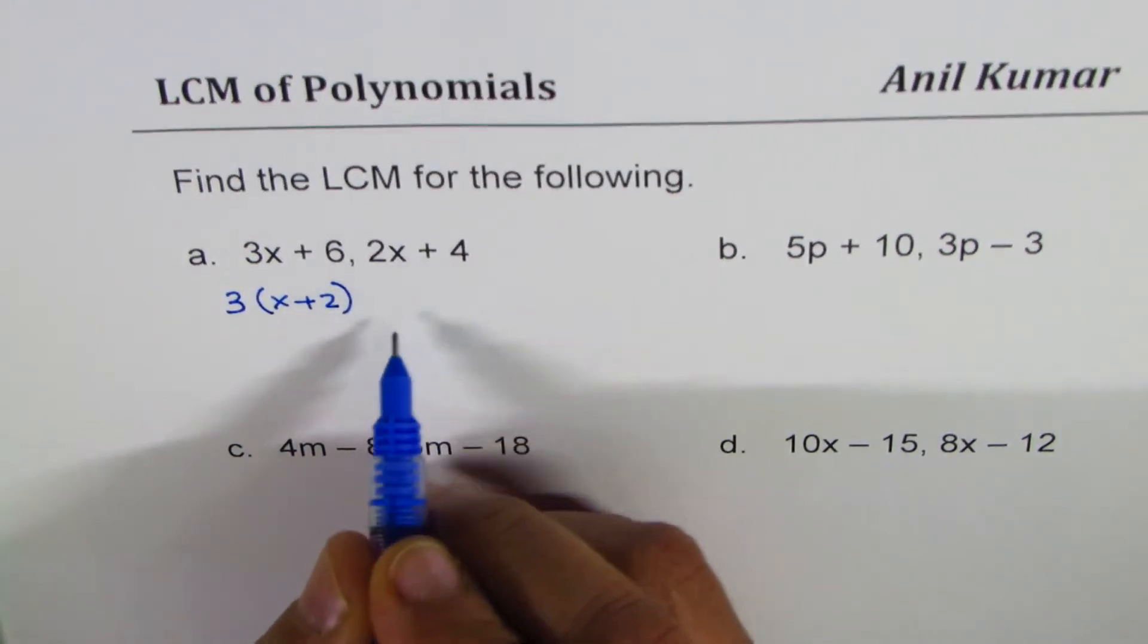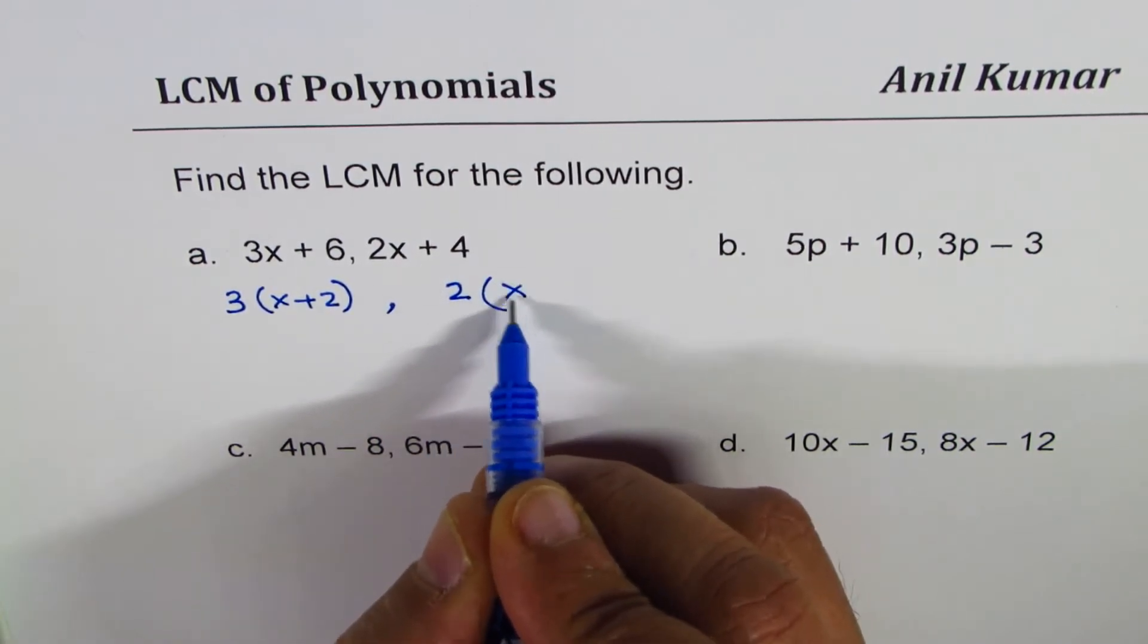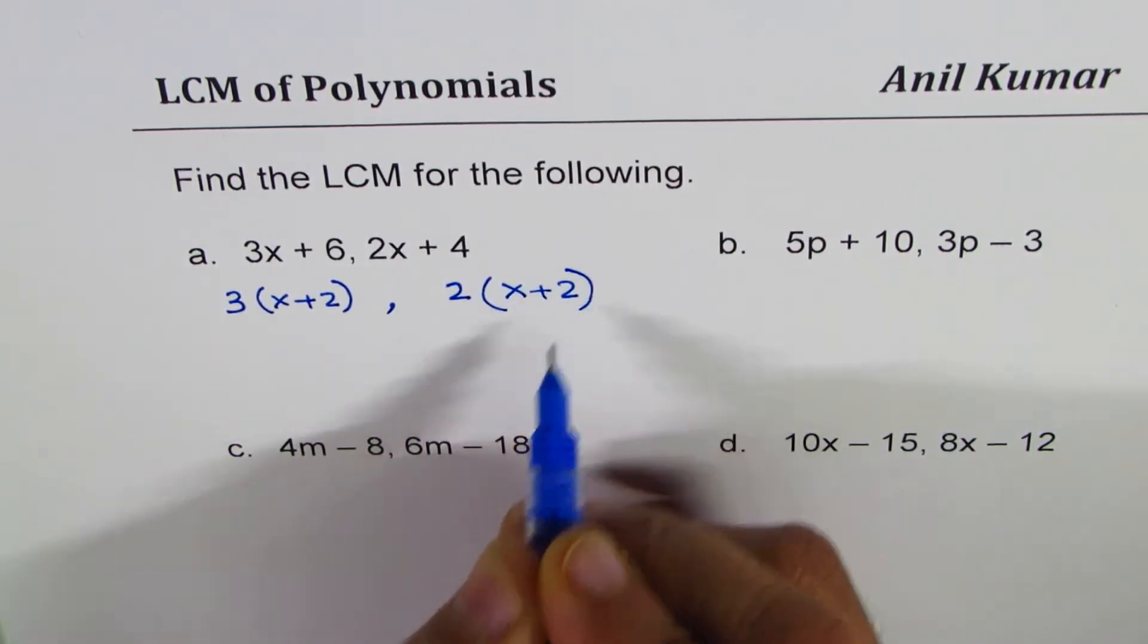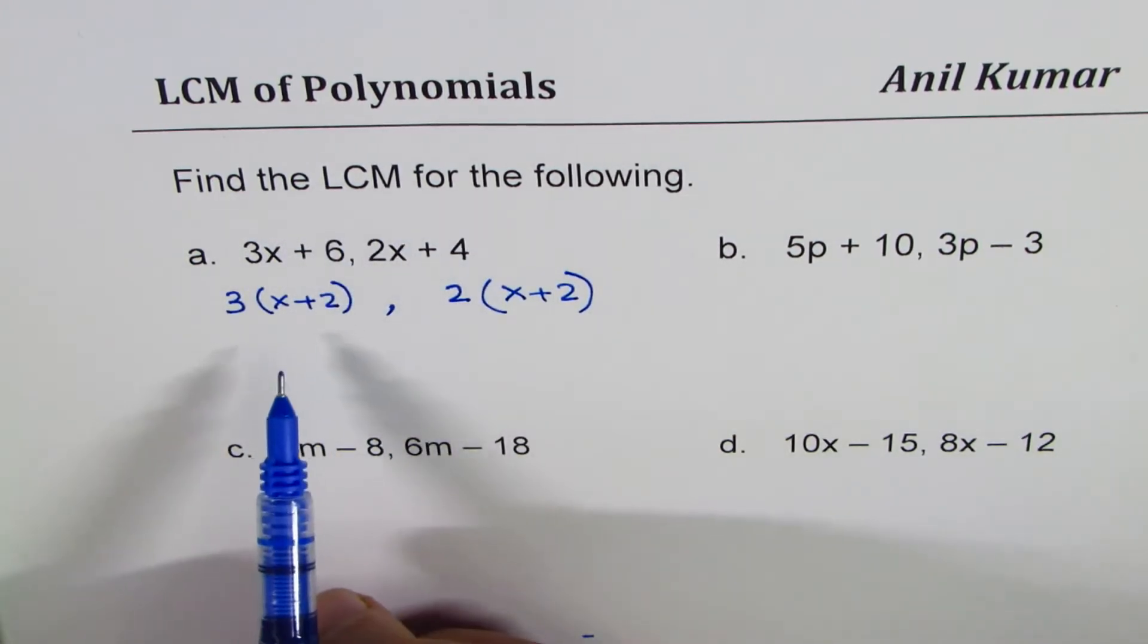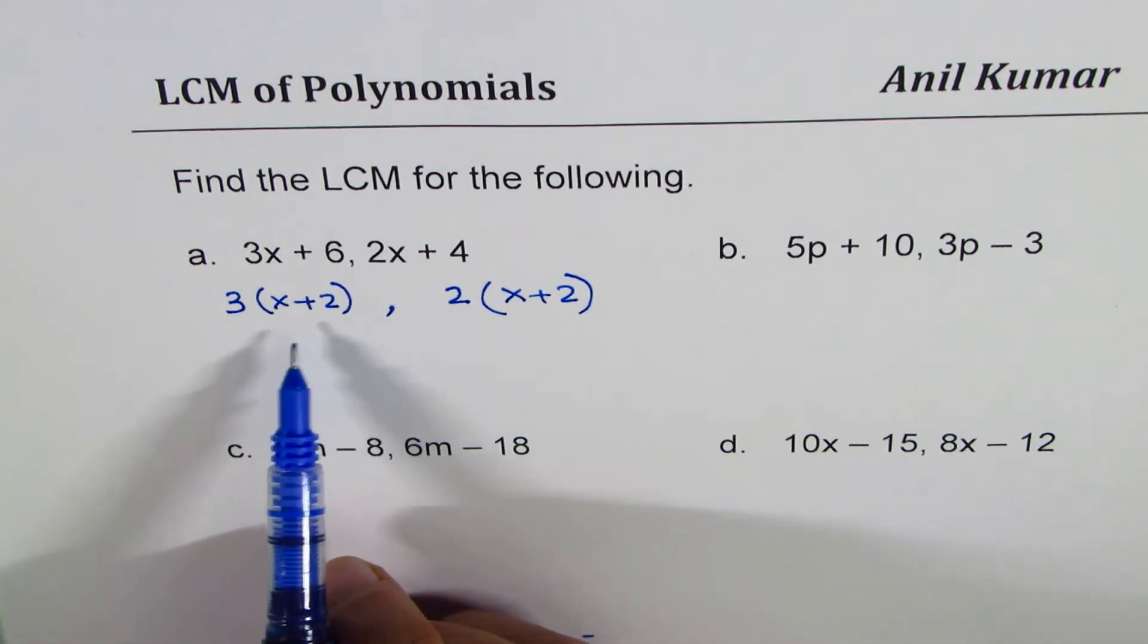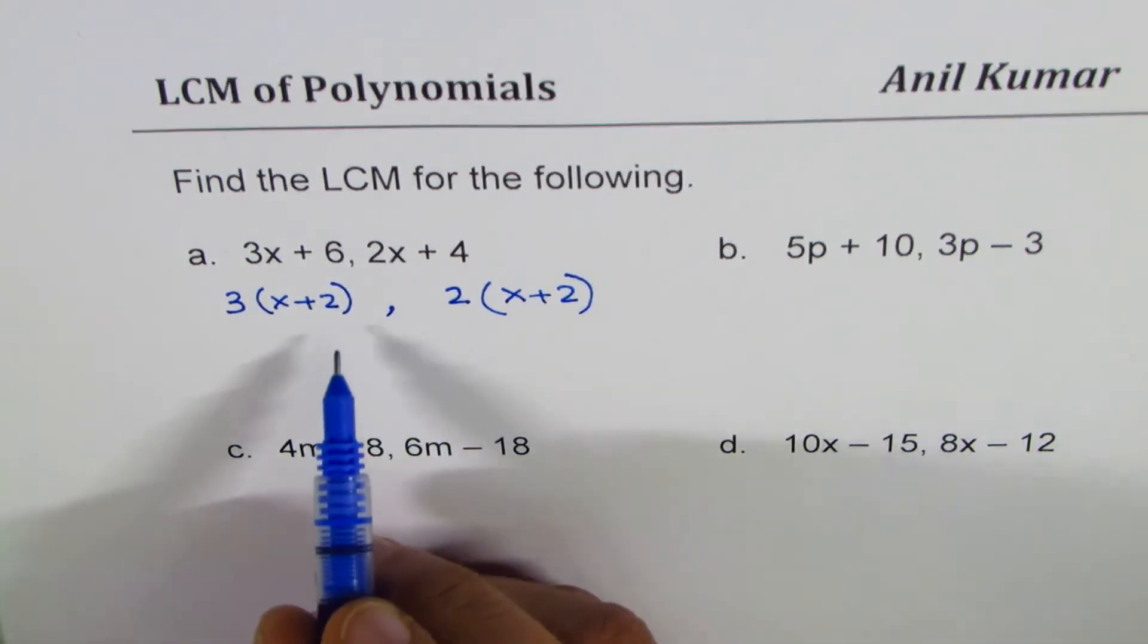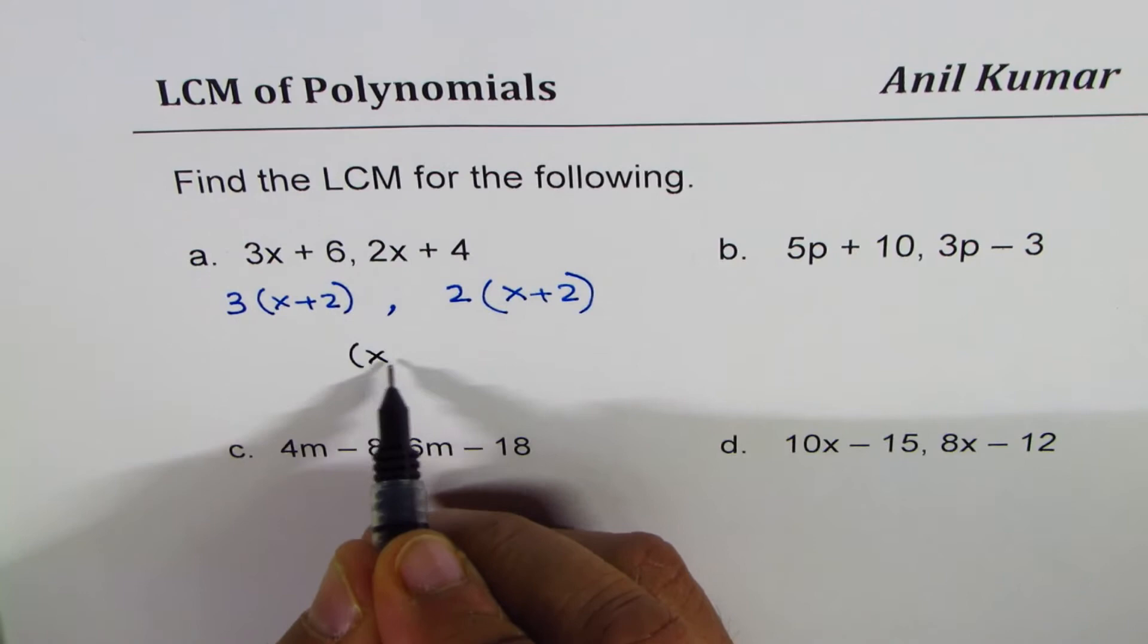For 2x plus 4, I can take 2 as a common factor, I get x plus 2. Now when we say lowest common multiple, that means that the result should be multiple of both. The lowest common multiple, as you can see, could be x plus 2 is a common factor, so we will write x plus 2.